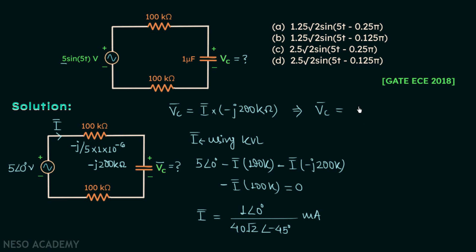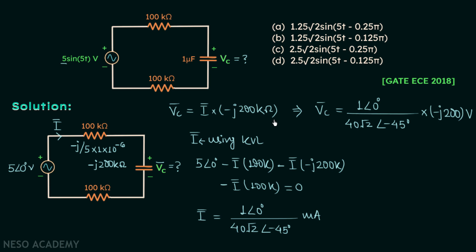VC phasor equals 1∠0° divided by 40√2 ∠-45°, multiplied by minus j200 kilo ohms. The unit of VC phasor will be volts because milliamps multiplied by kilo ohms gives volts. Converting minus j200 to polar form gives 200∠-90°. When you simplify, VC phasor equals 5 over √2 ∠-45°.